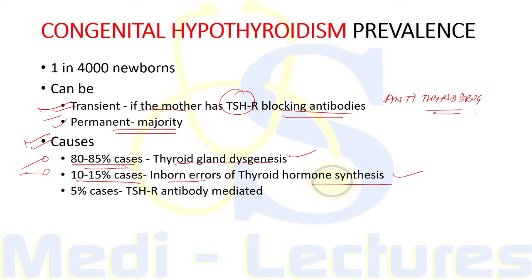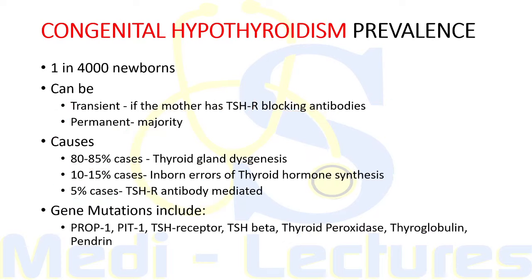Certain gene mutations have been identified, with the main ones including mutations in PROP1, PIT1, TSH receptor, TSH beta, thyroid peroxidase enzyme, thyroglobulin, and pendrin.